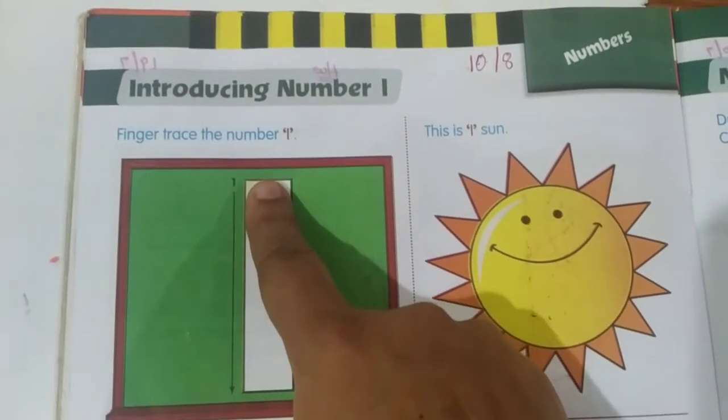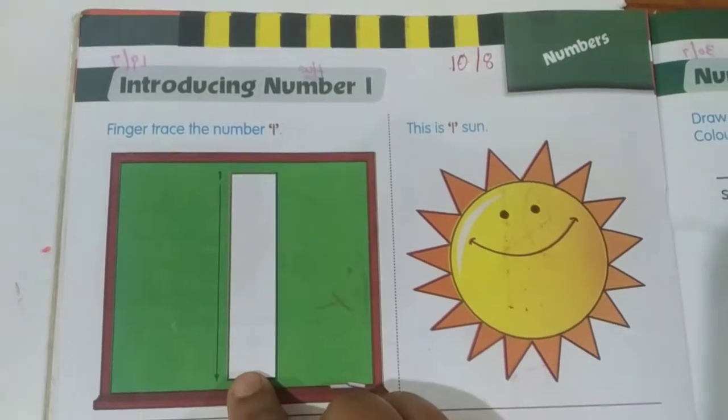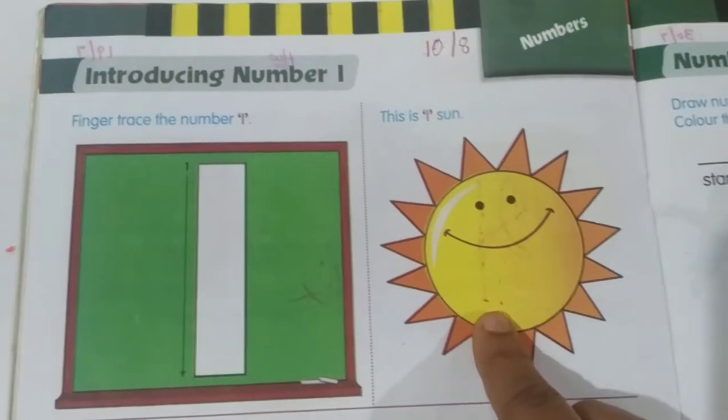Yes, see from top to bottom, standing line. Finger tracing on standing line. Then how many suns are here?